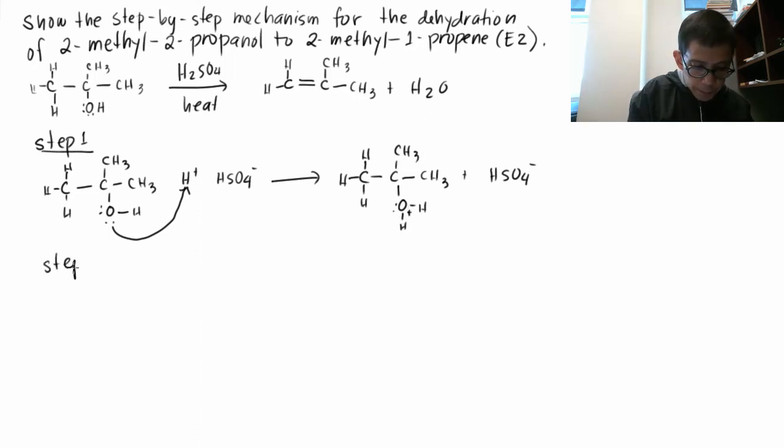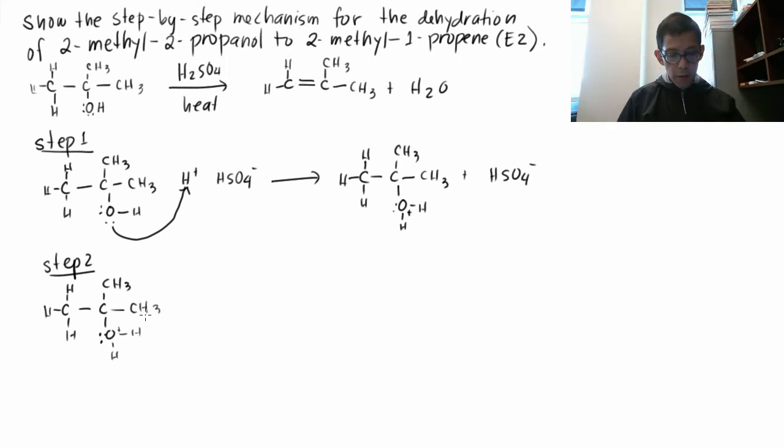Okay, step two. The reactant in step two is the product in step one. So C, H, H, H, C, CH3, OH, that should be a lone pair. Lone pair, H, H, plus charge, CH3. Okay, so we do have a tertiary carbon there.